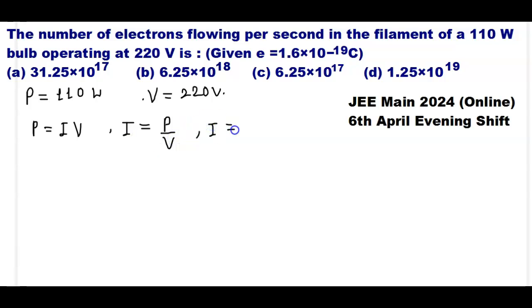Current I is equal to the power value given as 110 watts divided by the voltage value 220. So 110 and 220 you cancel.